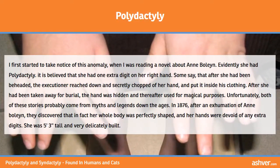The most common extra finger is on the side of the hand next to the ulnar, or little finger. It is not always a real-looking finger — sometimes it is just a small, thin piece of skin tissue with a fingernail attached. But it has been known to be fully functional, and not only that, it may just be one of several extra fingers.